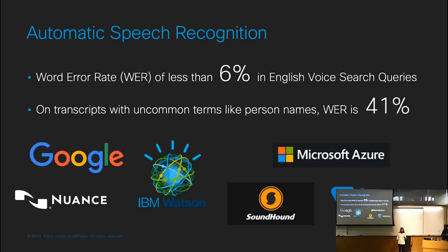It's important to note that while all of these generic ASR systems have reportedly low word error rates on generic English language — about less than 6% on English voice search queries — when you get into the area of noisy environments, different accents, and uncommon terms like person names or other proper nouns and entities, the word error rate becomes significantly higher. We found that in our dataset, it goes up to almost 41%. So it's important to keep this in mind throughout the rest of the pipeline, and I'll point out models where we're focusing on making them robust to these ASR errors.